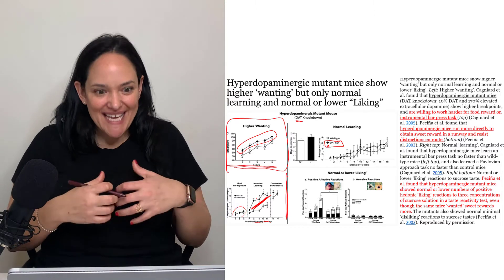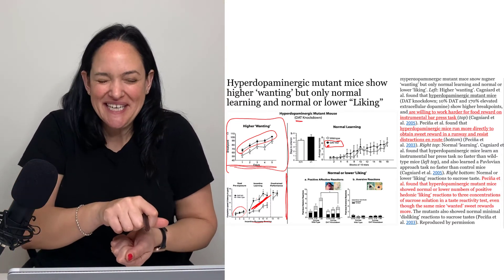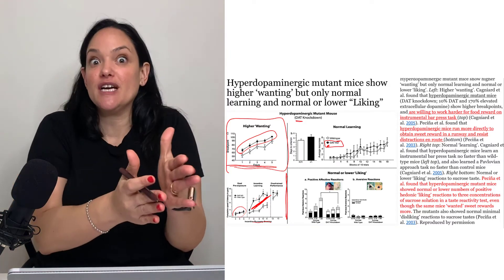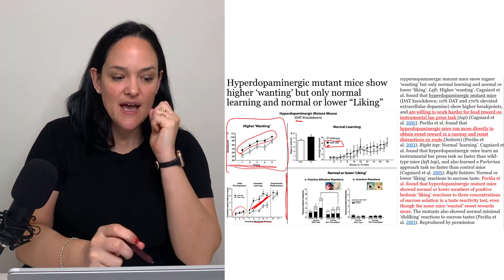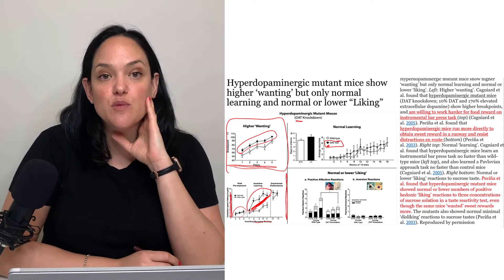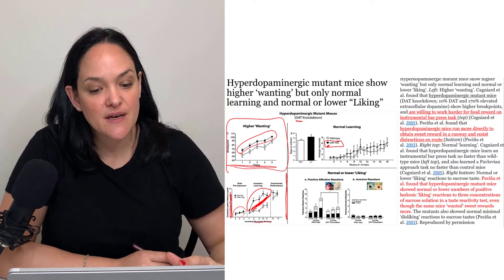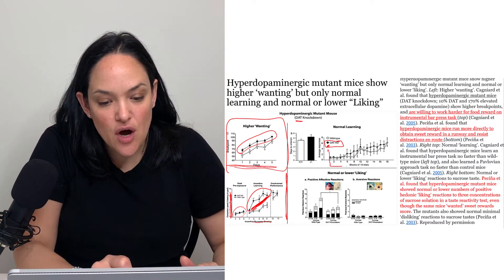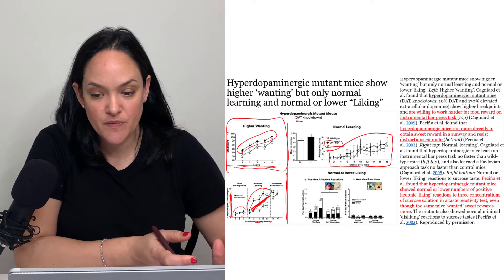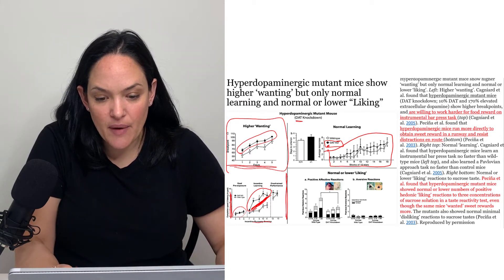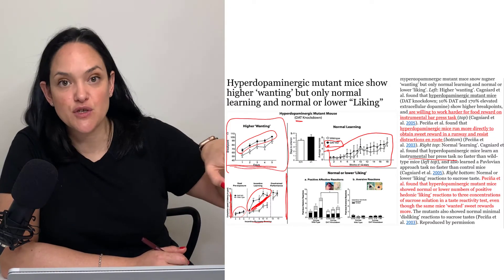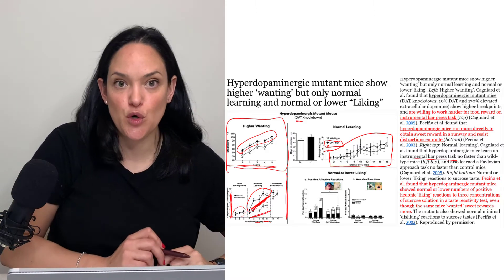The hyper-dopaminergic mice rush out of the gate when it opens and figure out tasks much more quickly when there's a reward attached. However, when there is no reward attached, we don't see them learning any faster — they learn an instrumental bar press task no faster than wild-type mice. So the effect is specifically reward-driven.